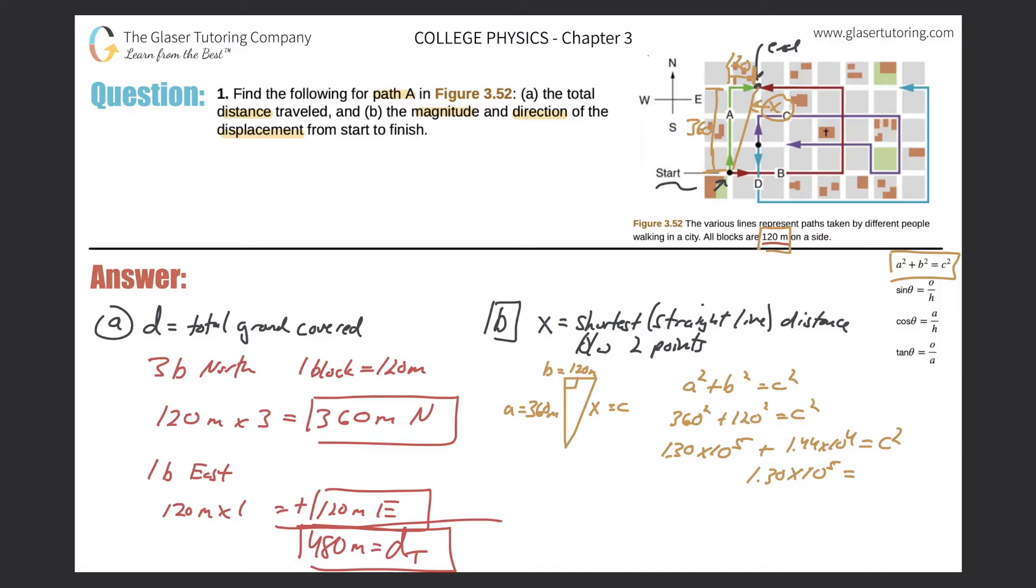Add those two values together now. So 1.3 times 10 to the 5th, plus then the 1.44 times 10 to the 4th. And we get a value of exactly 1.30 times 10 raised to the 5th. Actually, it's not the same. How could that even make any sense? I was going to try to reason out something that didn't make sense. So let's try it again. 1.3 times 10 raised to the 5th, plus 1.44 times 10 raised to the 4th. That sounds a little better now. So 1.44 times 10 raised to the 5th. And that now will equal C squared.